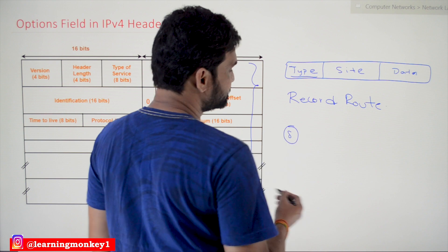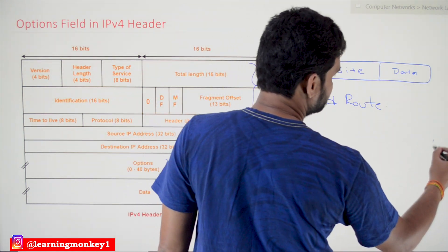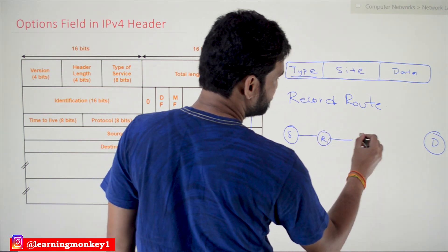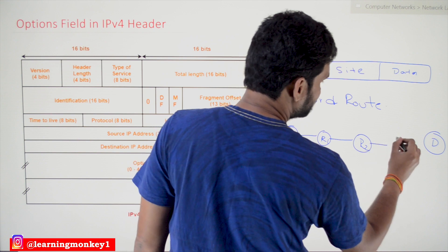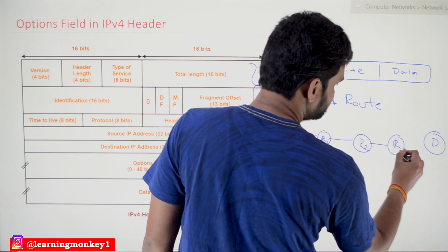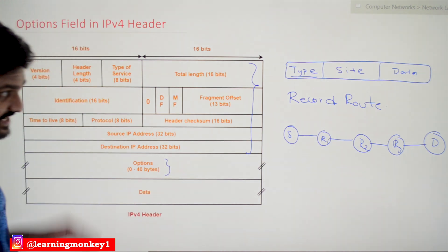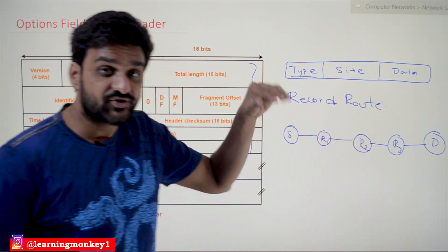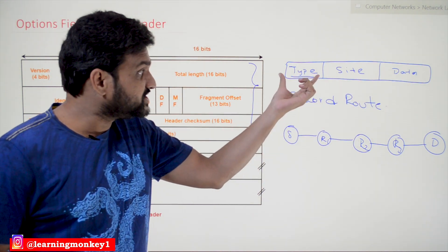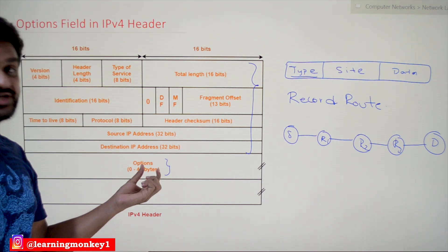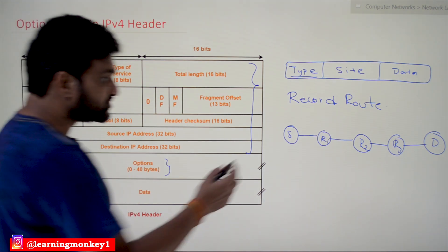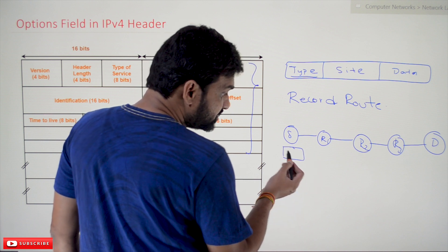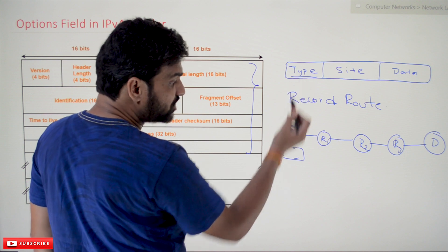In the record route option, you have a source address and a destination system, and the packet travels through intermediate routers. If the record route option is set within the options field, as the packet is transmitted, the option type is set at the source. The packet then begins its journey toward the destination through the route.